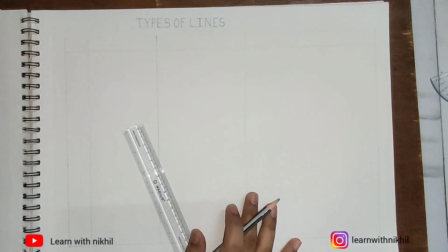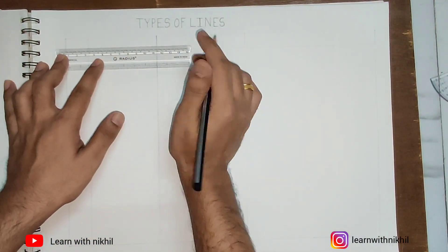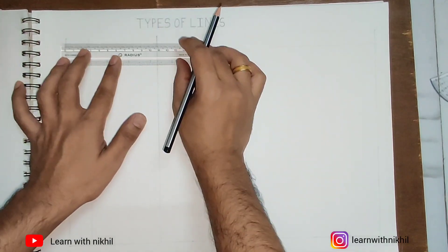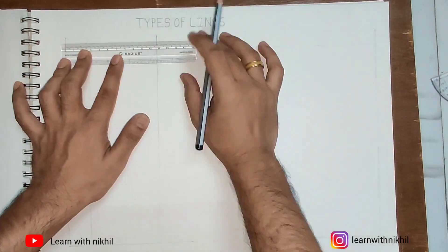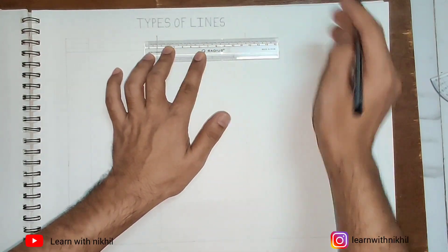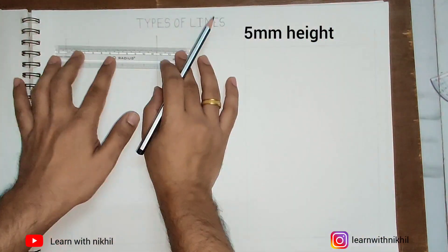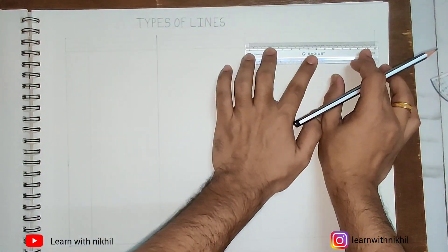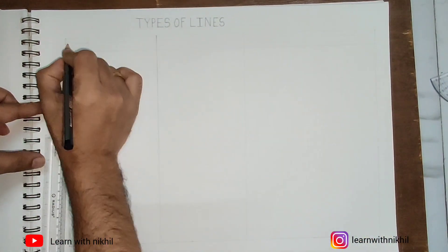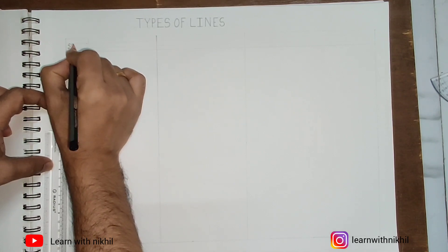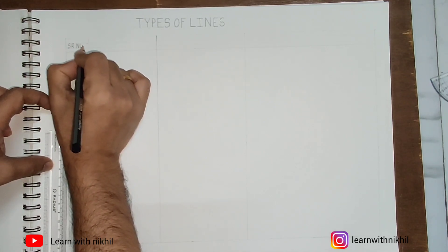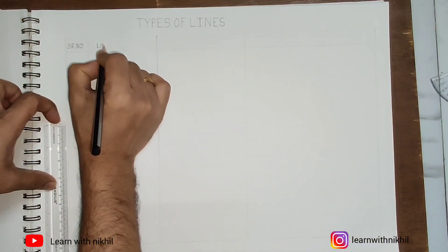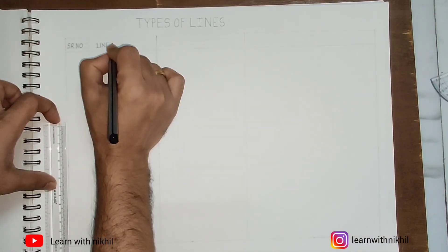Whatever I write inside these columns should be written within a five millimeter height, that is 0.5 centimeters. I'm drawing two parallel lines and in between I'll write the content. In the first column I am writing serial number, with a height of 0.5 centimeters. The second column is line type.